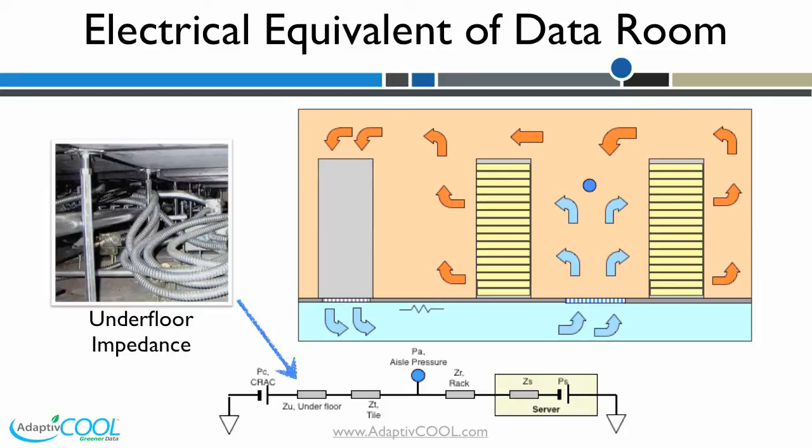If the rack consumes 1000 CFM of air and the tile can only offer 800 CFM, then the rest 200 CFM will be drawn from other areas of the room including the hot aisle. The cold air available at the rack determines the temperature of the server.